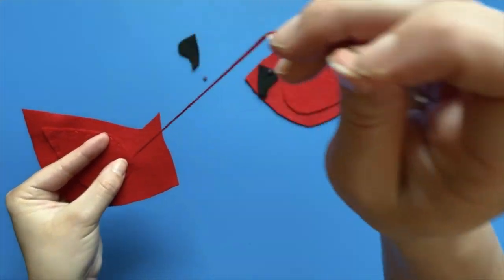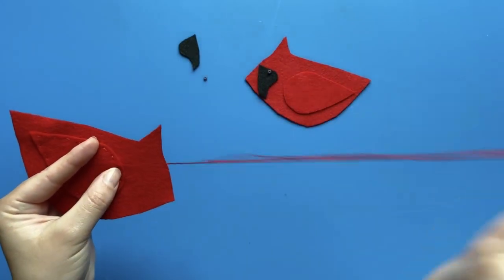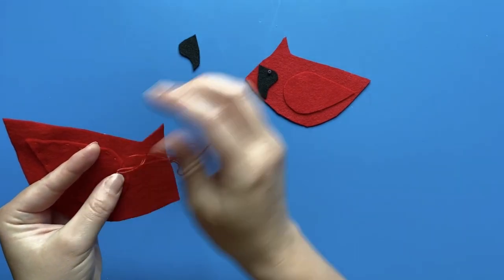When you have finished stitching the wing to the body, make sure that your last stitch goes from the front with the wing to the backside and pull it through.